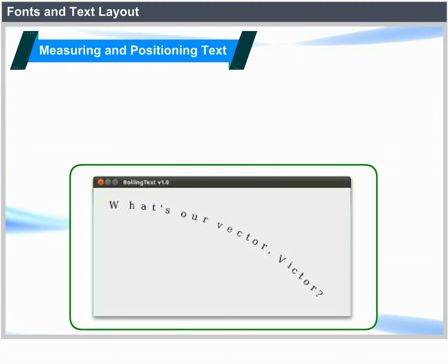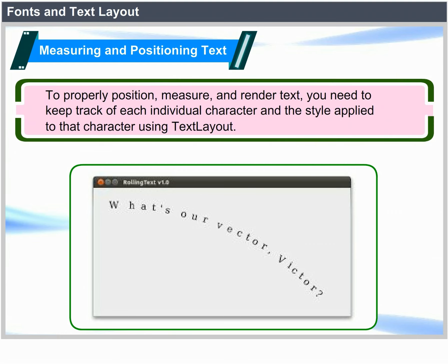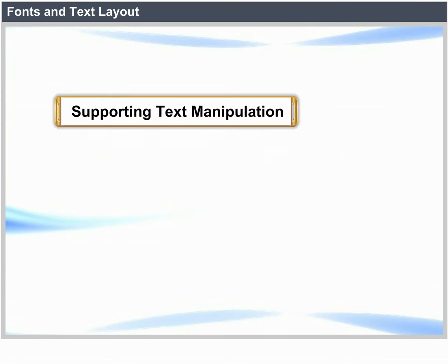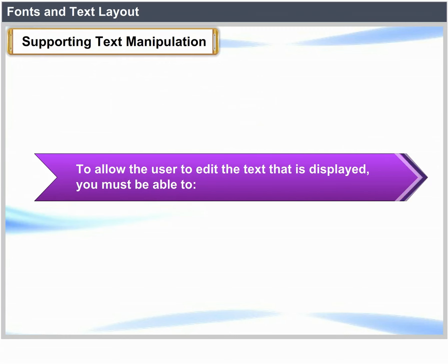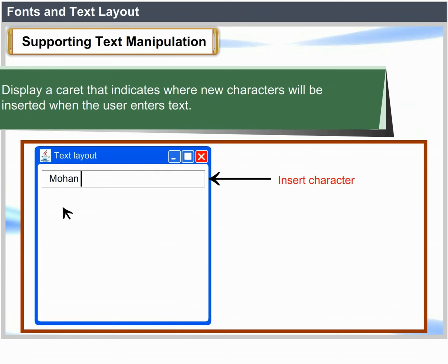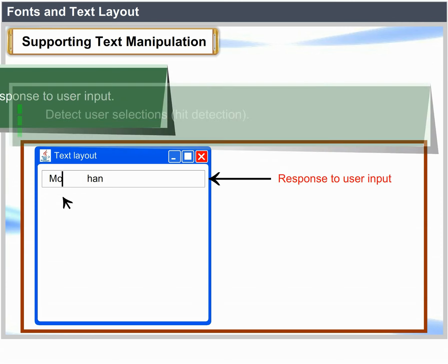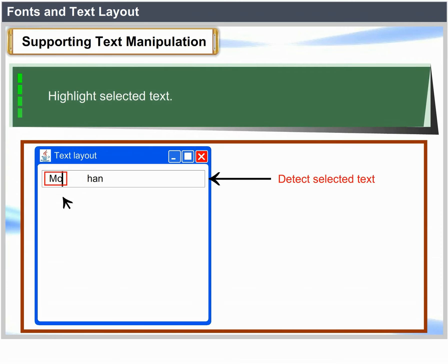Measuring and positioning text: Text is always displayed using multiple fonts and styles such as bold or italic. To properly position, measure and render text, you need to keep track of each individual character and the style applied to that character using TextLayout. Supporting text manipulation: To allow the user to edit displayed text, you must be able to display a caret indicating where new characters will be inserted, move the caret in response to user input, detect user selections, and highlight selected text.